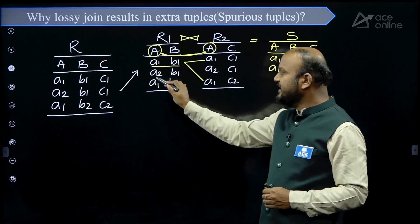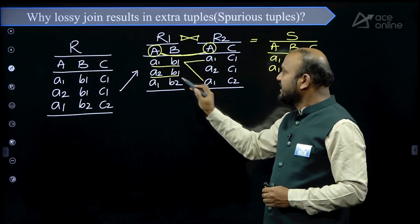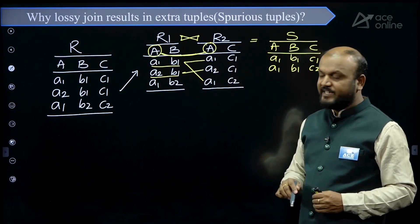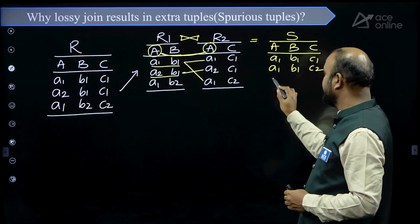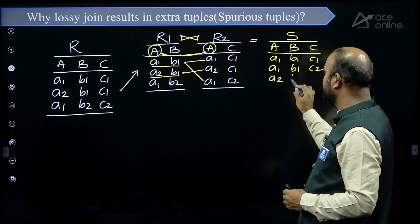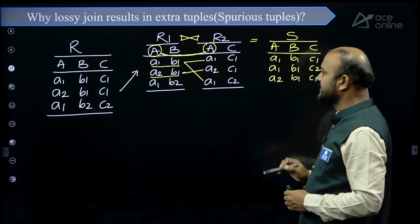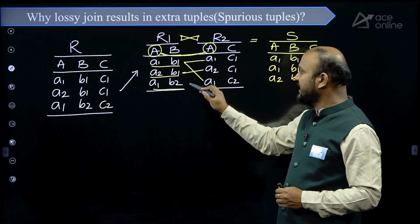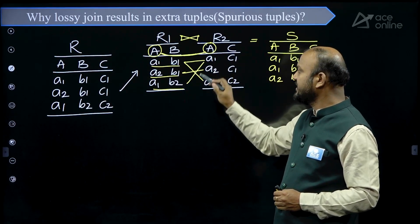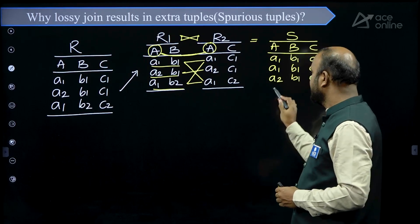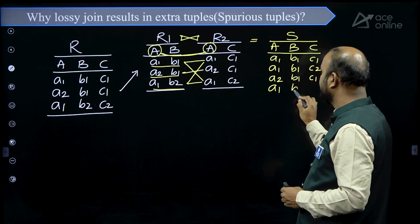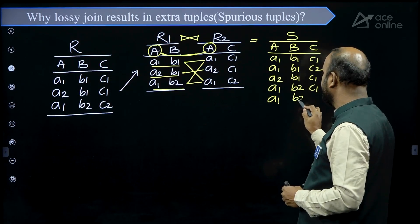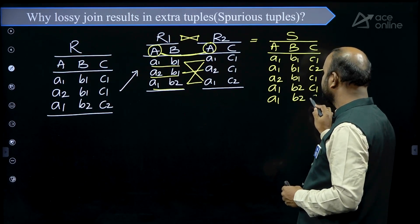For the second tuple, A2 = A2 is matching only one tuple of R2, so we get A2, B1, C1. And for the third tuple A1, B2: A1 = A1 matches, so we get A1, B2, C1 and A1, B2, C2.